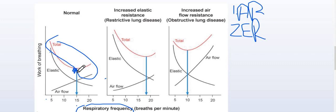We have two conditions to consider: one is obstructive airway diseases and the other is restrictive airway diseases. Let's see what changes are happening in each.